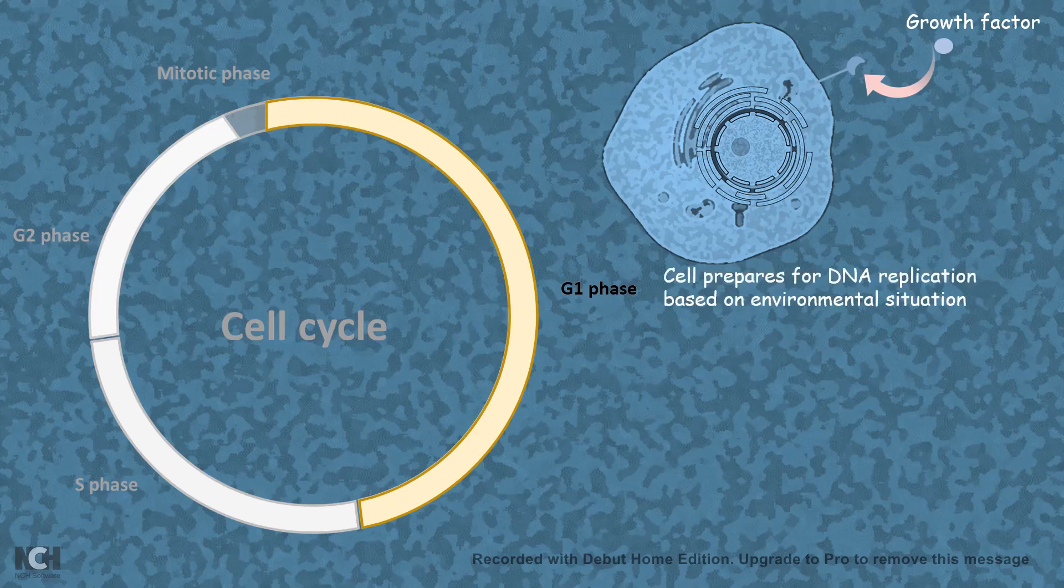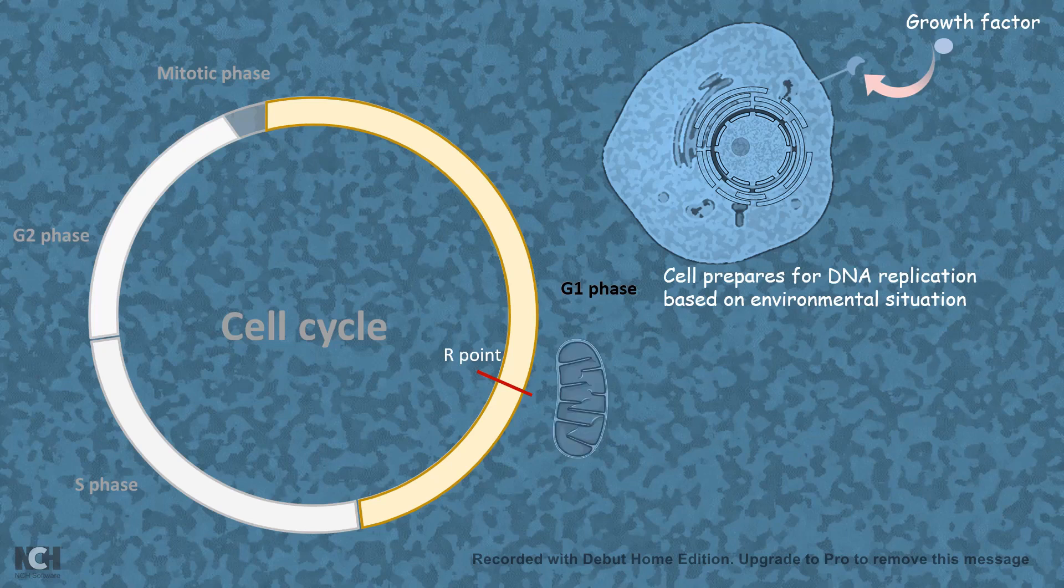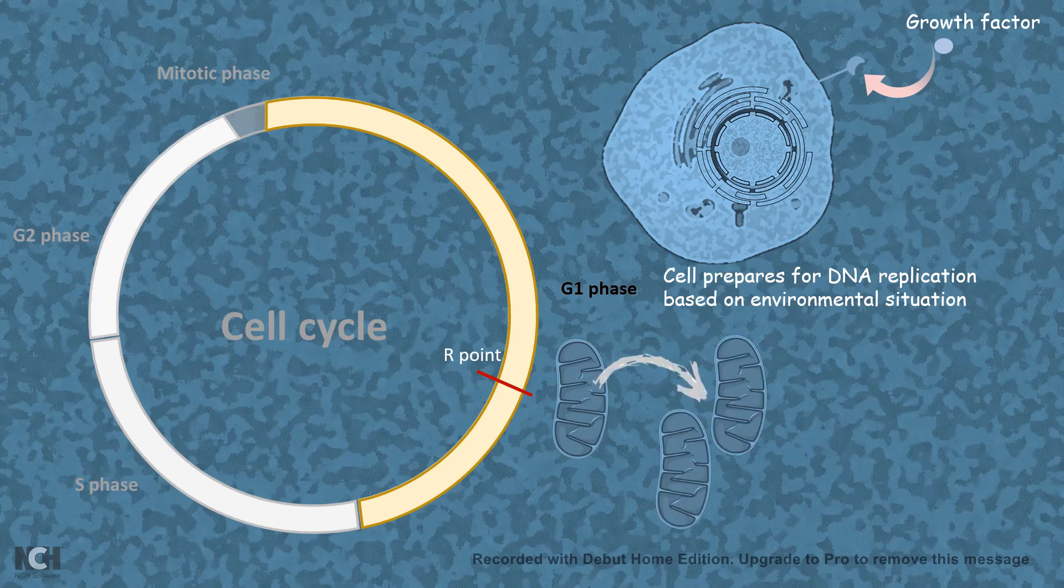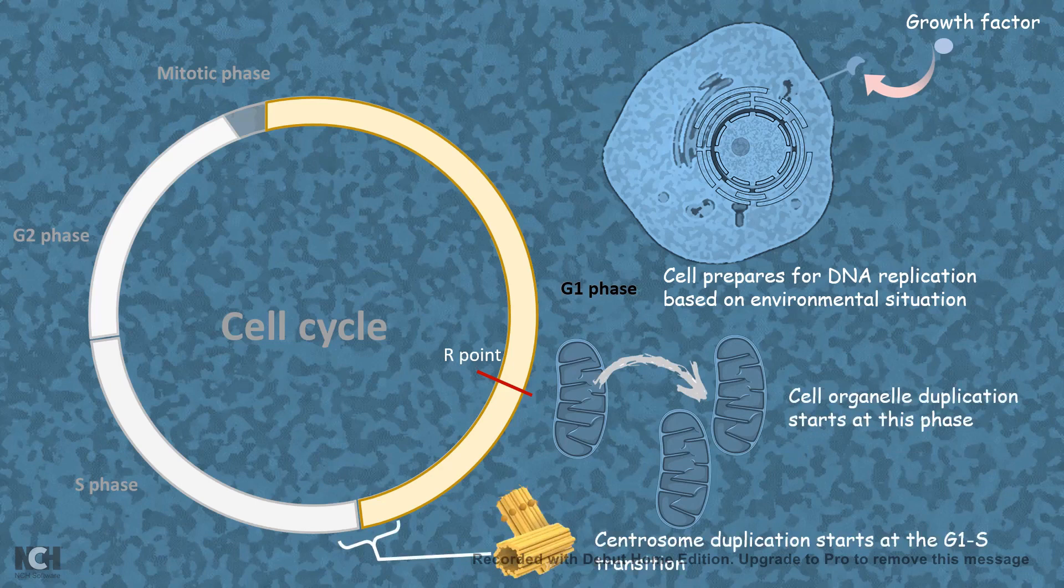If there is enough growth factor in G1 phase, the cell will try to divide. There is a particular time point in the late G1 phase known as the restriction point. Once the cell crosses the restriction point, it is committed to division—it has to divide. At the end of G1 phase, the cell also duplicates its mitochondria and centrioles, which are important for cell division.